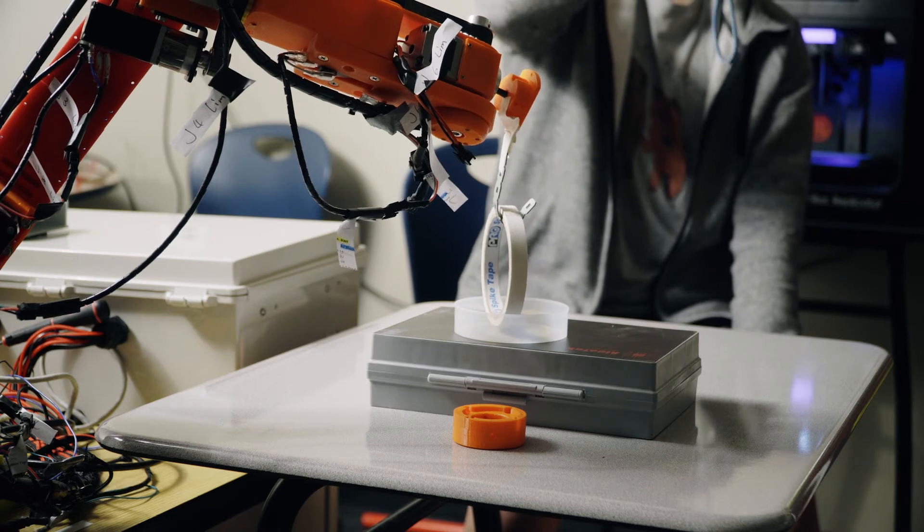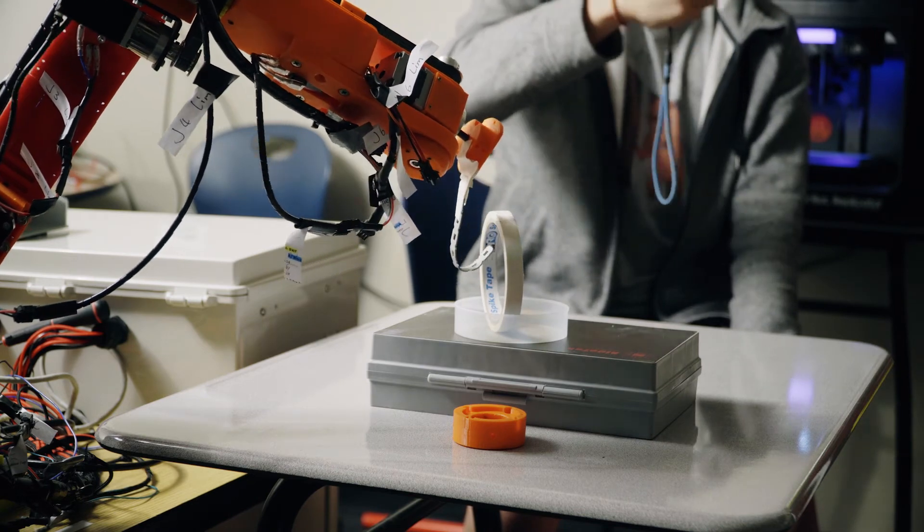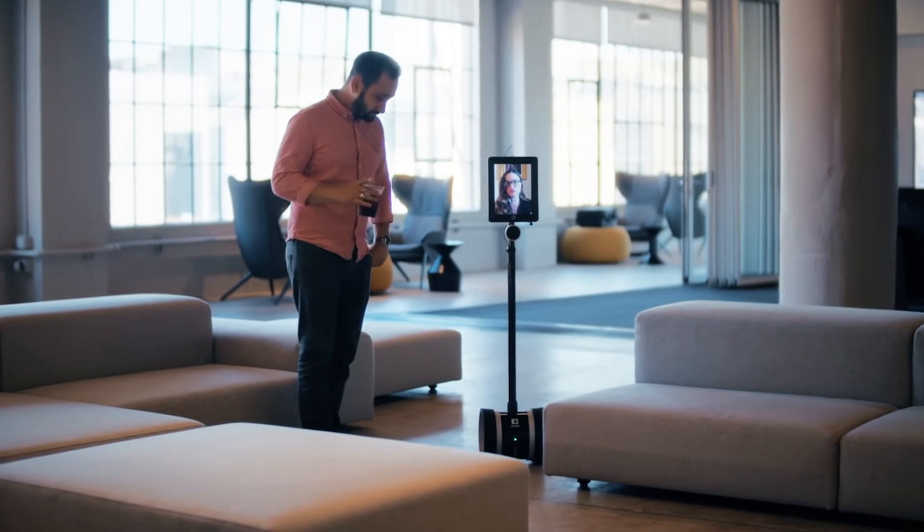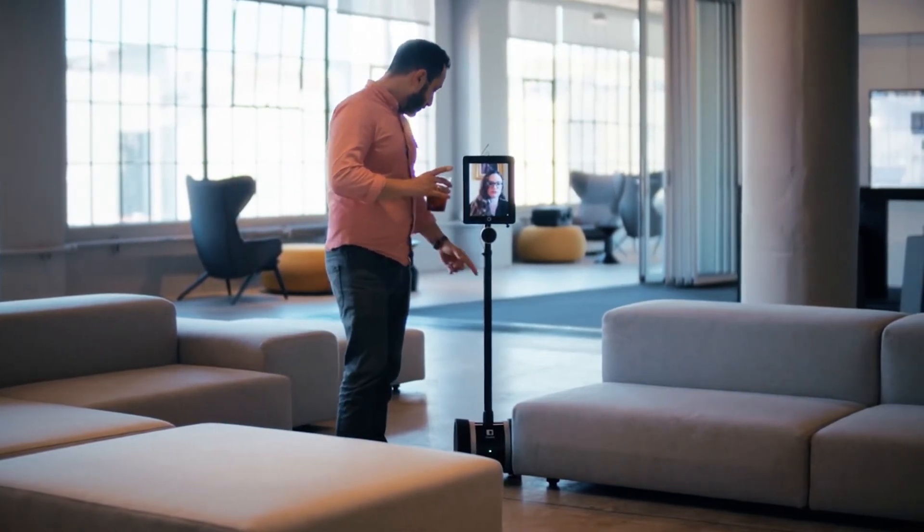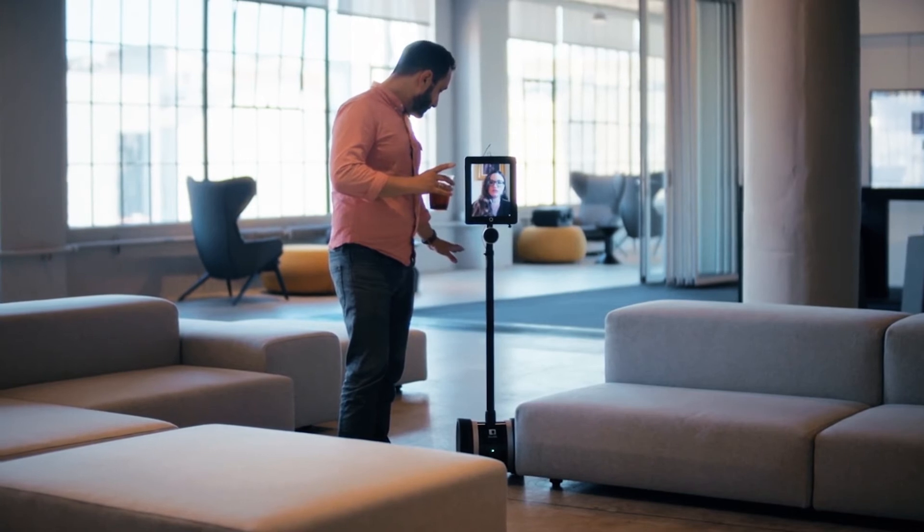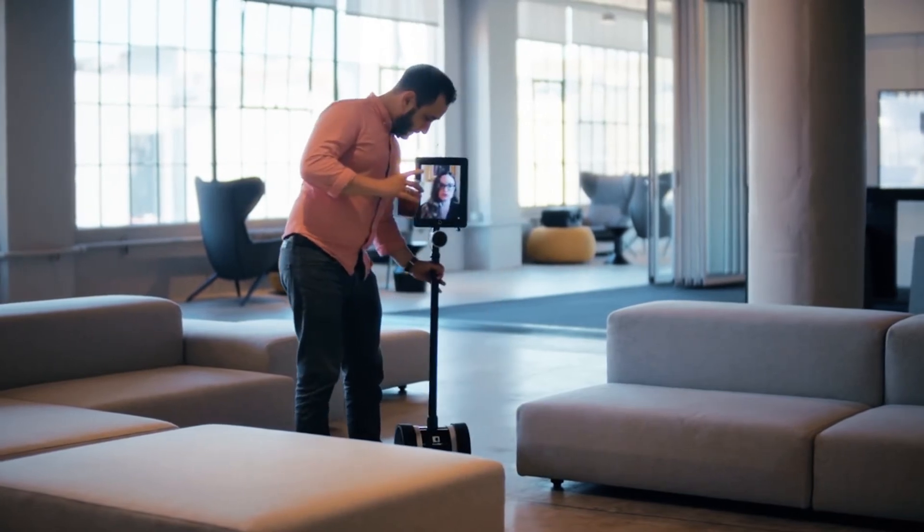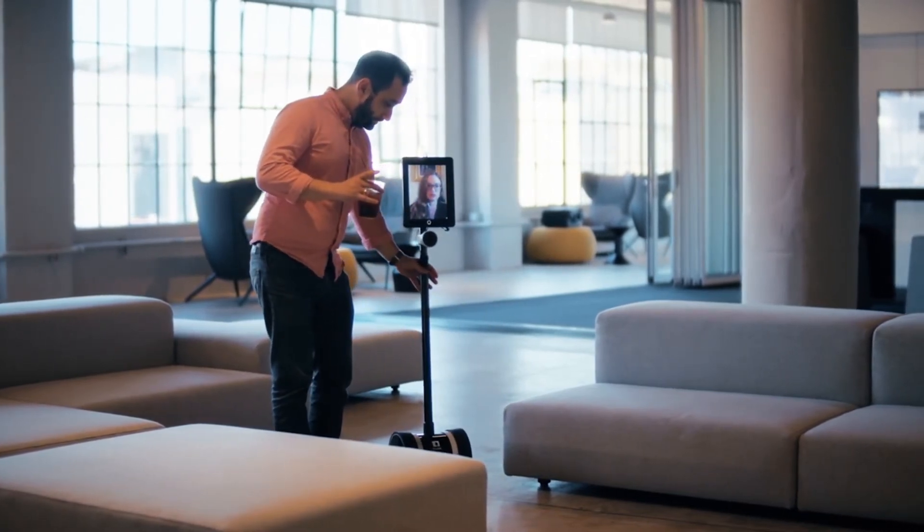Another use case of the robotic arm is improving the remote presence experience. Currently, remote presence devices consist of a camera and a screen on wheels. This offers little to no maneuverability to the user, since they are unable to open doors, write on boards, nor use their hand gestures, which believe it or not, is a very important part of communication.